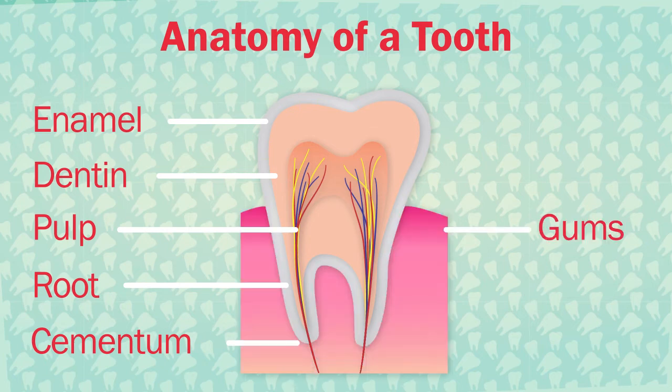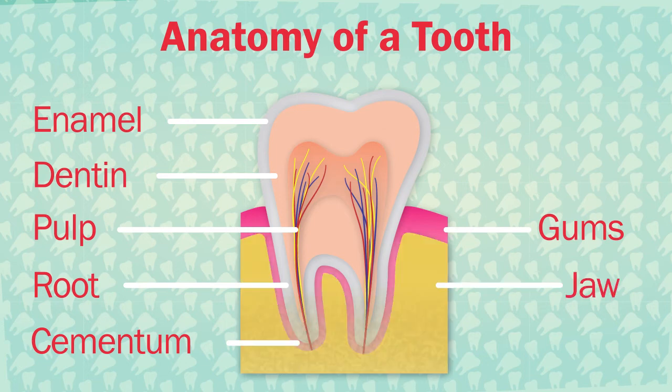Gums are the soft tissue that surrounds your teeth and helps hold them in place in your jaw. The jaw is a bone that holds your teeth. When someone has a cavity, the enamel is missing in that spot.